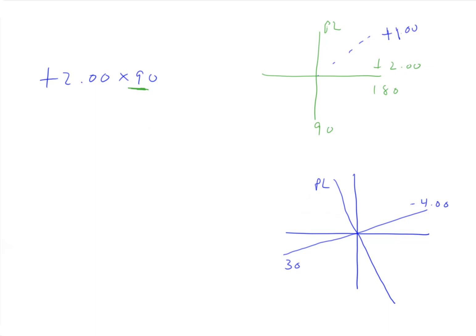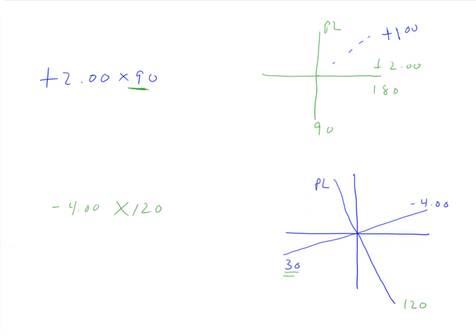The next problem: if this is 30, then 30 plus 90 is 120. The plano is along the 120 axis. So we know we're axis 120, and we know the power is minus 4. The way we write that is minus 4 axis 120. Don't say 'minus 4 at 120' — that means something totally different. 'Minus 4 at 120' means the minus 4 is at 120, which is the opposite. The correct way to say this is minus 4 axis 120.